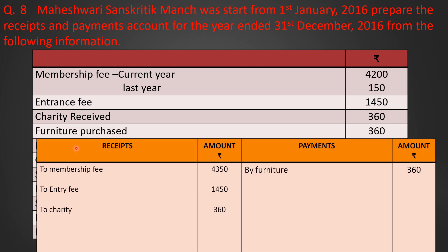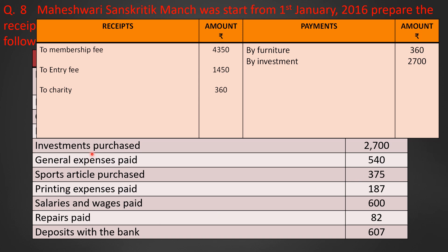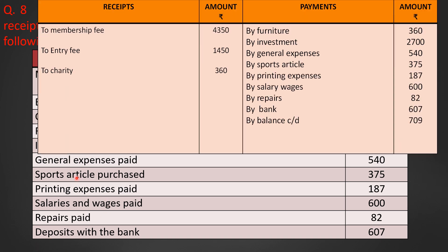Furniture purchased Rs. 360 — by furniture Rs. 360 on the payment side. Investment purchased — by investment Rs. 2,700 on the payment side. Sports article purchased Rs. 375 — by sports article Rs. 375 on the payment side.